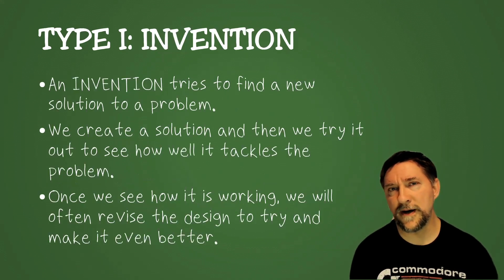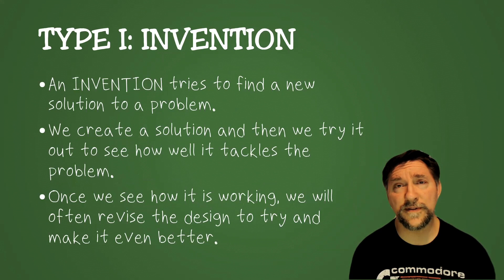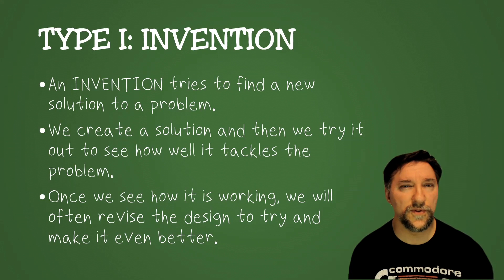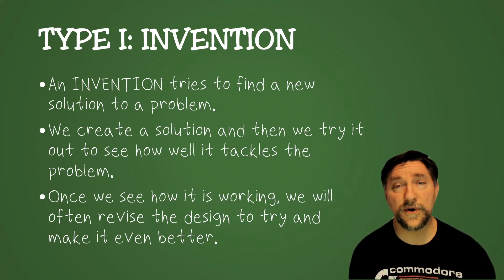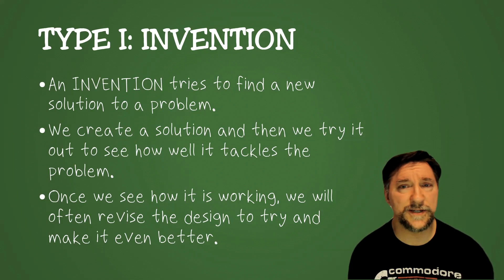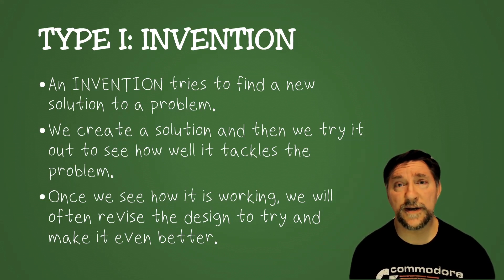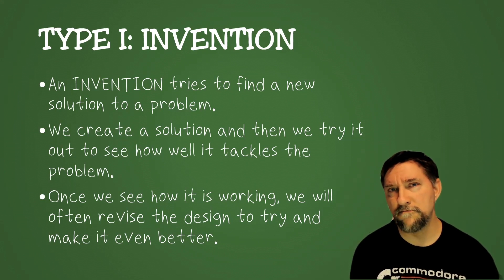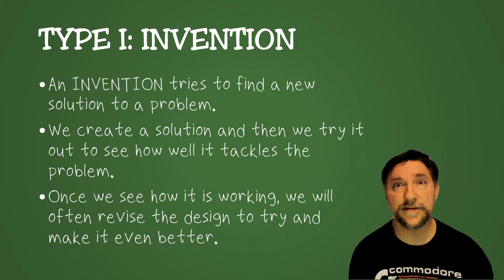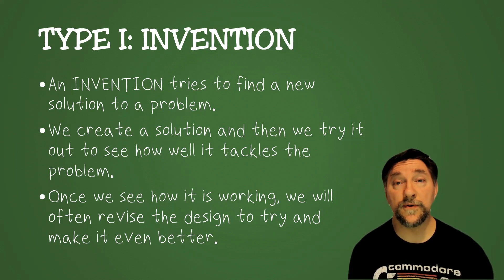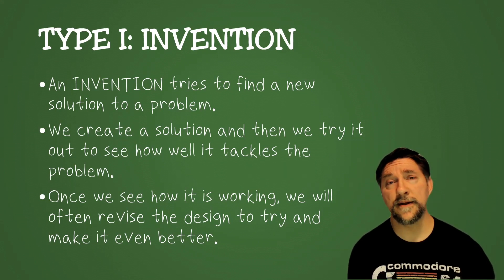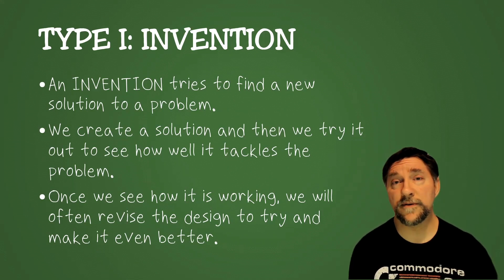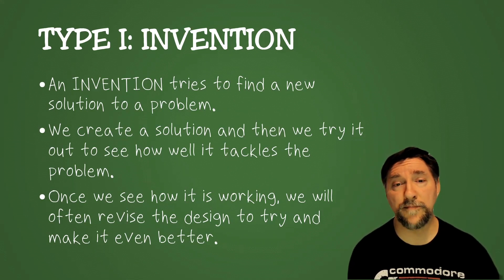The next type of project is the invention — this is the engineering side of things. You're trying to look at a problem and solve that problem with your invention. In the course of completing your project, you would make simpler versions of your device and see how it works, then revise it and try it again, getting it to work better and better as you go through the engineering design cycle.